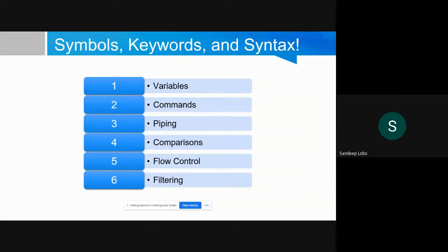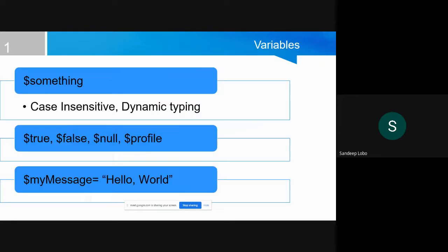Now let's look at variables, commands, piping, comparison operators, flow control, and filtering. Variables are defined in PowerShell with the dollar symbol. They are case-insensitive and not a fixed type — you can cast them to any type on the fly. You don't need to define them before you use them. There are also reserved variables: $true, $false, $null, and $profile. These are reserved keywords with default values that cannot be reassigned.